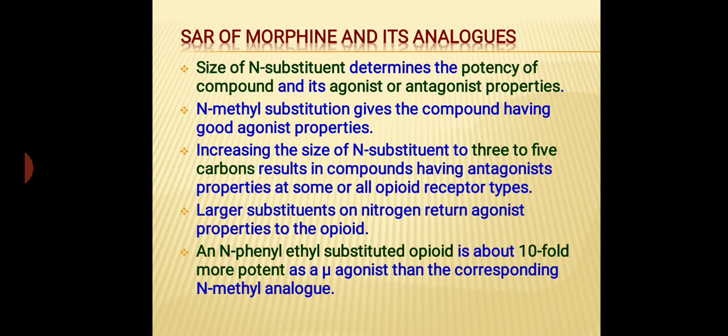If methyl substitution is present at the nitrogen atom, then the compound has good agonist properties. If we increase the size of the nitrogen substituent to 3 to 5 carbon atoms, then the compounds obtained have antagonistic properties at some or all opioid receptors. If larger substituents are present on the nitrogen atom, then activity returns to the agonist type.